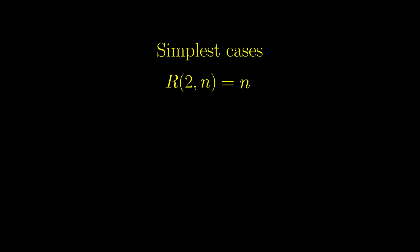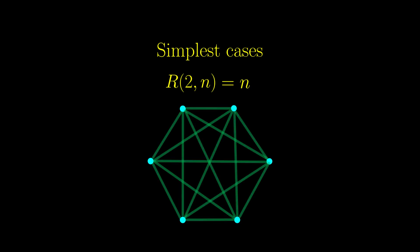To prove this, we first show that n vertices work. In this graph, you either have a red edge, which fulfills the 2 part, or you don't have any red edges, meaning that all edges are green. And so, you fulfill the n part of the problem as well.